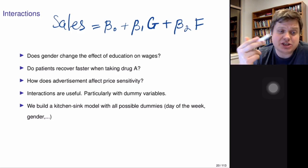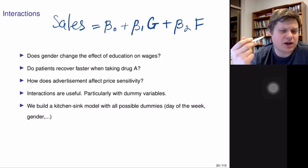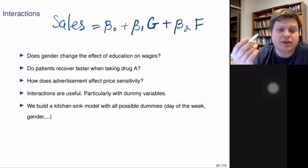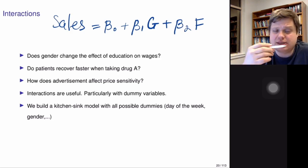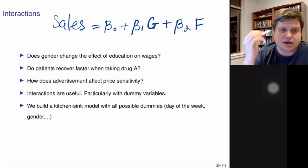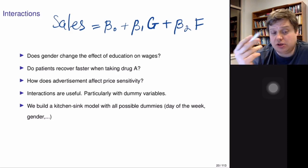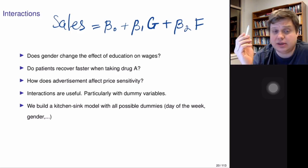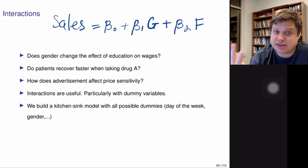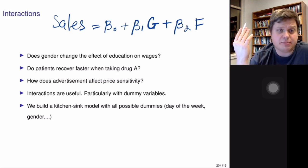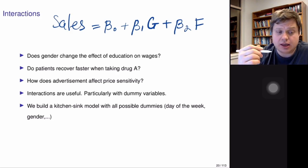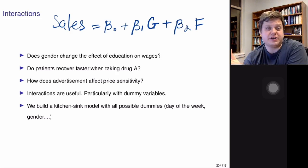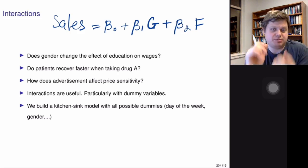Seeing the ad twice might actually affect you and make you think maybe you should try this product. Another way to think about this interaction: say you searched for shoes, Google showed you an ad for a store, you clicked and bought the shoes, and then you go to Facebook and see the same advertisement again — but you already bought the shoes. So that advertisement has no effect. The fact that the ad was shown on Google affected how you react to the Facebook ad; you ignore it because the shoes have already been bought.